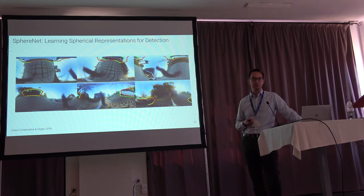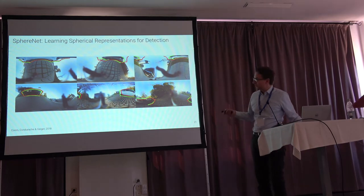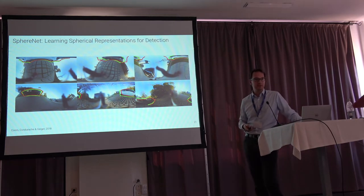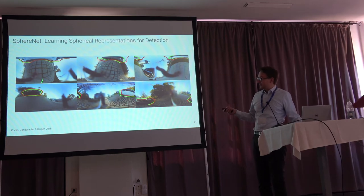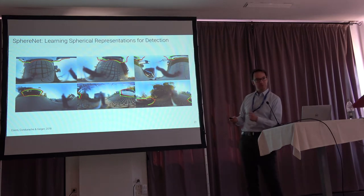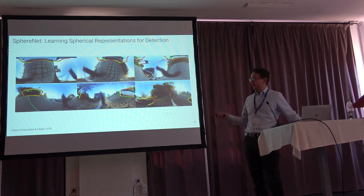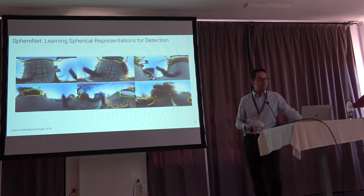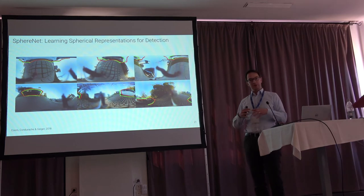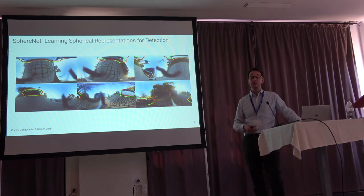In the equirectangular representation, if you look at the poles — the top and bottom of the sphere where the data is projected — you get heavy distortions. If you move the camera just a tiny bit, these distortions change a lot. So if you train a CNN directly on this representation, it wouldn't work very well, because the CNN would need to encode all these distortions and learn distortion invariance from data. This requires a very high-capacity network and a lot of data.